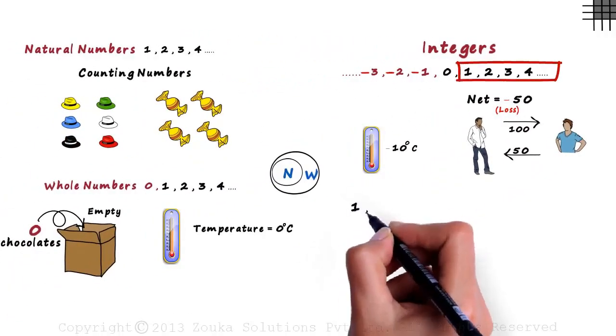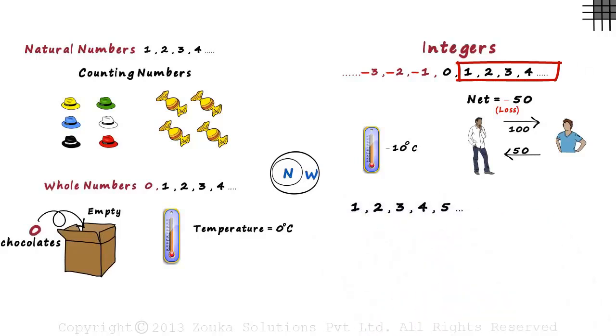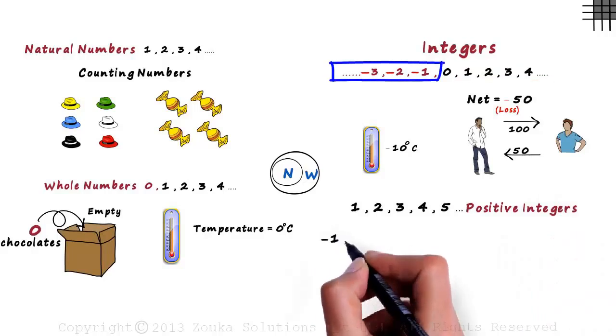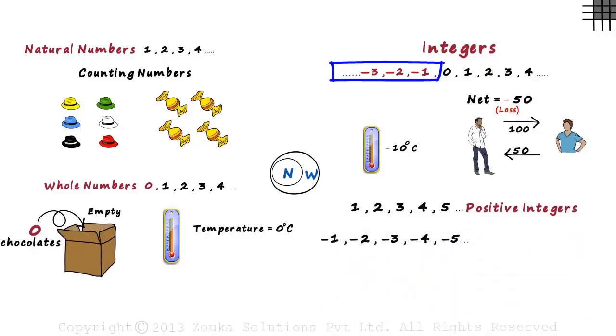The numbers one, two, three, four, five and so on are called positive integers. And numbers minus one, minus two, minus three and so on are called negative integers.